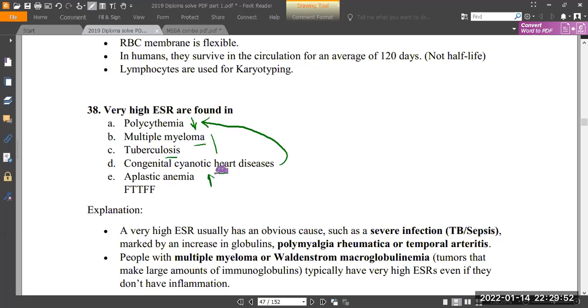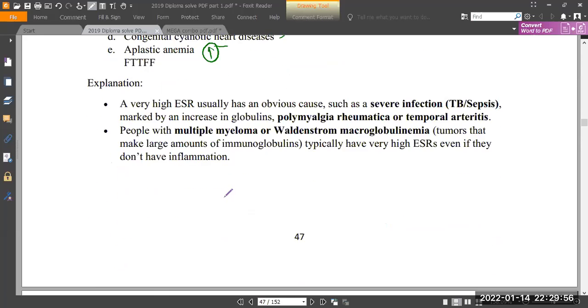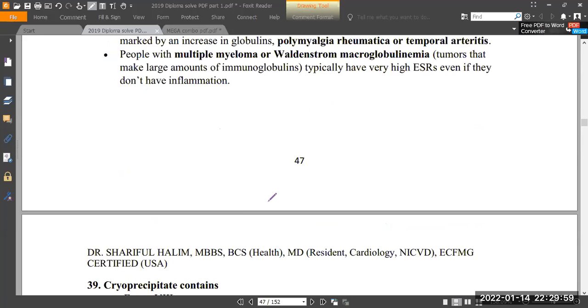Aplastic anemia is high but not very high. They are not high. Anemia is high. It is extra.